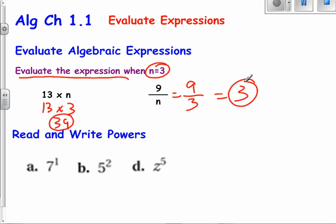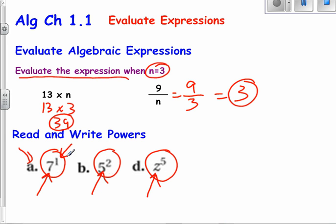And then reading and writing powers. If you remember, powers, this whole thing is actually a power. That is a power. That is a power. What you have is a base, which is 7, a base which is 5, a base which is z. And then you have the exponent, which in this case is 1. Exponent is 2. Exponent is 5.